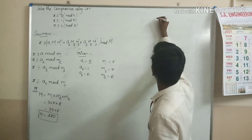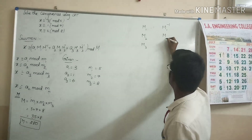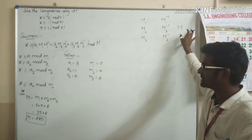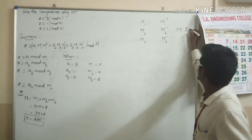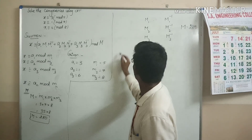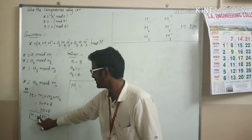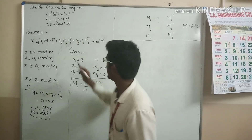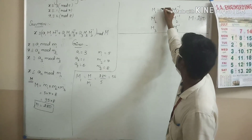We need to find capital M1, M2, M3, and their inverses, along with capital M. Capital M1 is equal to M divided by small m1, which is 280 divided by 5, giving M1 equal to 56.